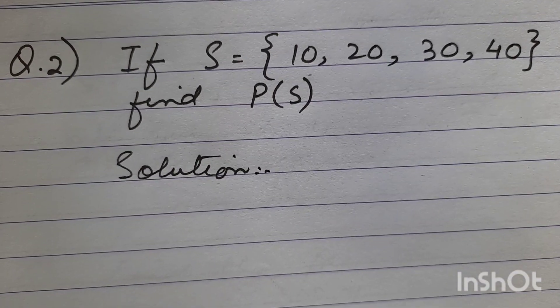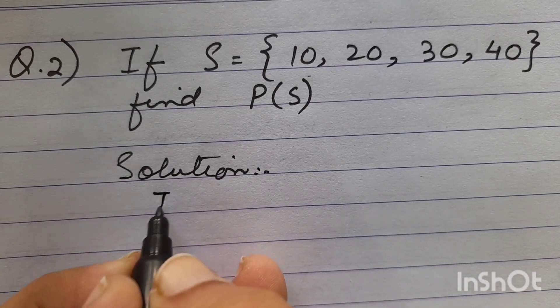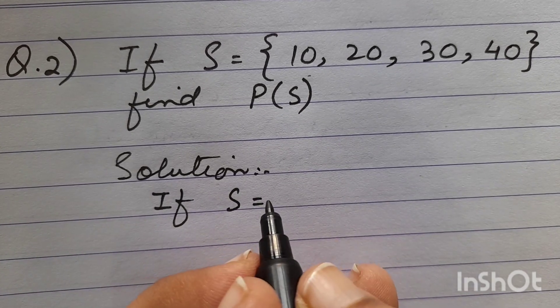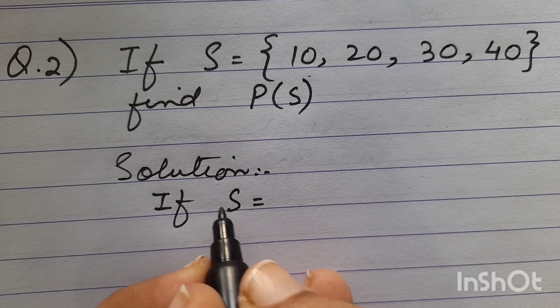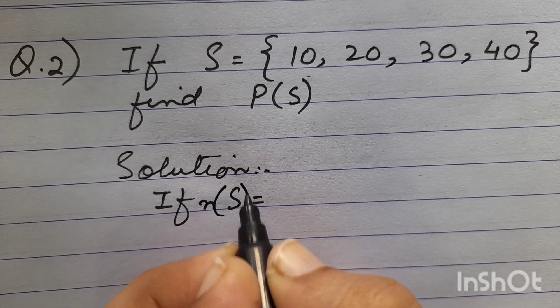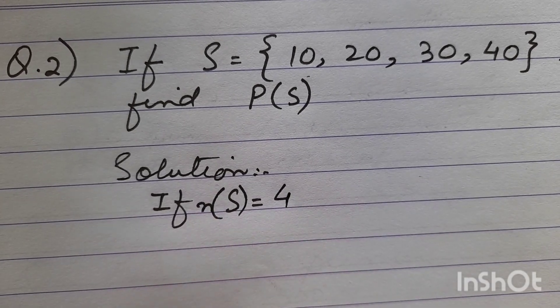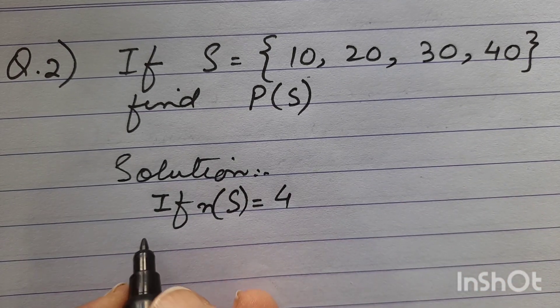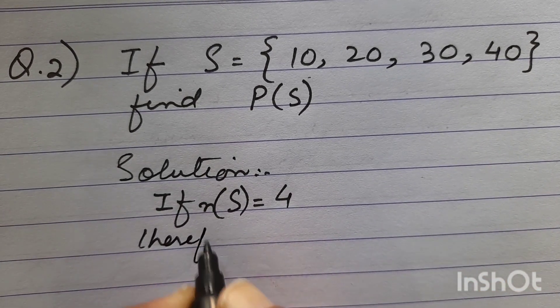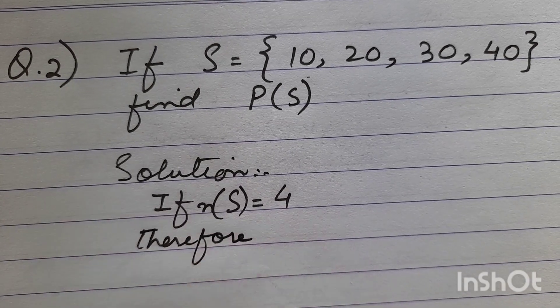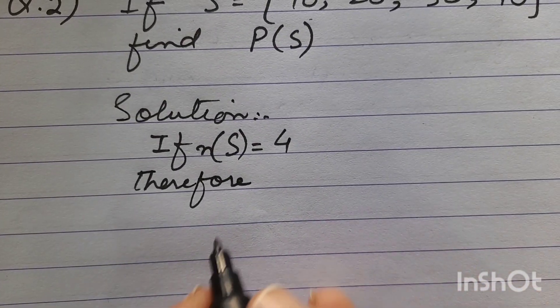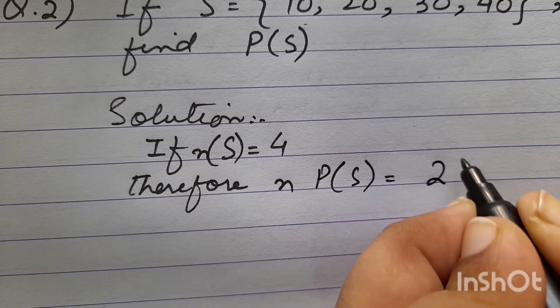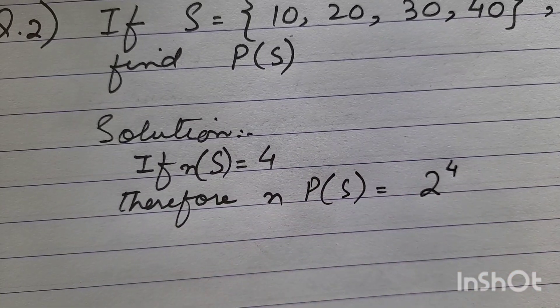First of all, find out if S is equal to 4. If S is equal to 4, you know how to find out the power set of S. If S is equal to 4, therefore, number of P(S) is equal to 2 to the power 4.